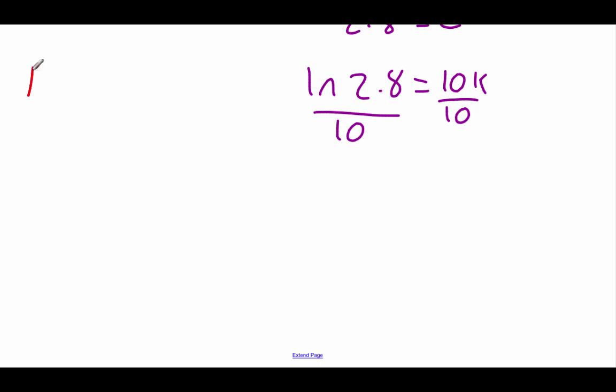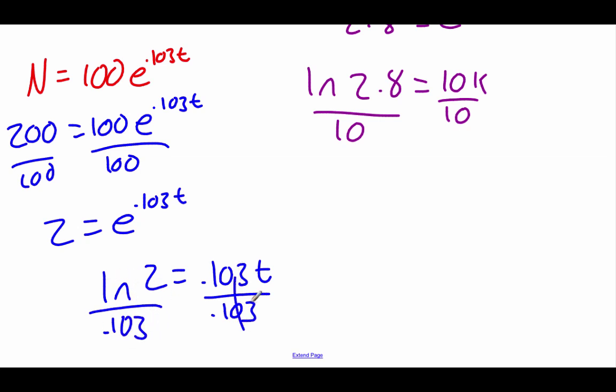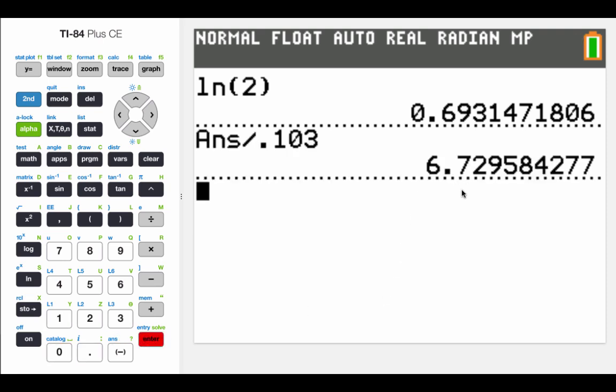Plugging in that k value, we've got n equals 100 e to the 0.103 t power. And now we were told that we wanted our population to double. So I'm going to make this n value 200 equals 100 e to the 0.103 t. And then we'll go through and solve this one. So first step is to divide by that 100. So we get 2 equals e to the 0.103 t. Rewrite it in logarithmic form. So natural log of 2 equals 0.103 t. And then divide by that decimal. I'm going to type this left-hand stuff into my calculator. I'm doing that natural log of 2 first, hit enter, and then we'll divide that answer by 0.103. So we get a t value of 6.7 hours.